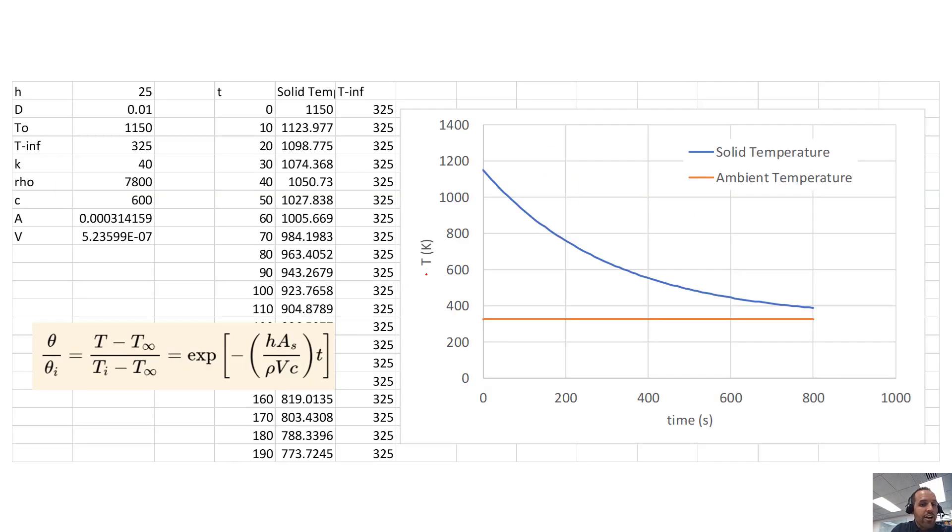I've done that already using just an Excel sheet. Here we have time in this column because we're asked to plot this, and here we're looking at the solid temperature. In this cell we just put in that exact formula, and we have references to all the properties we need over here. I used absolute references for those and then just a relative reference to get the time in there.